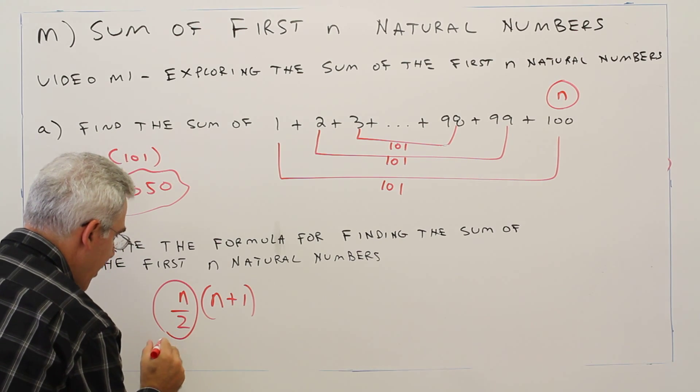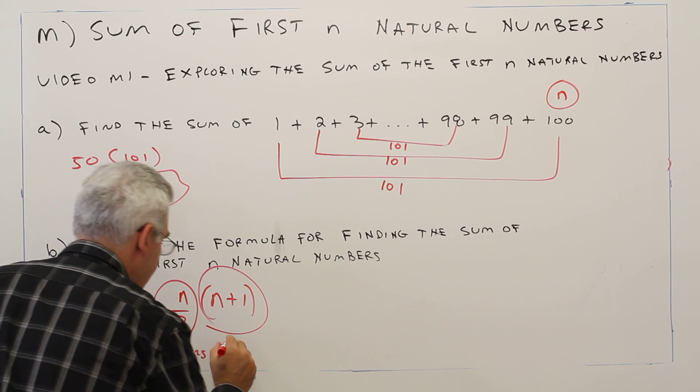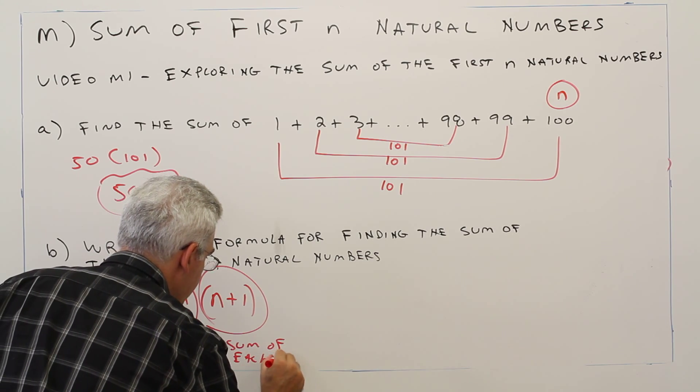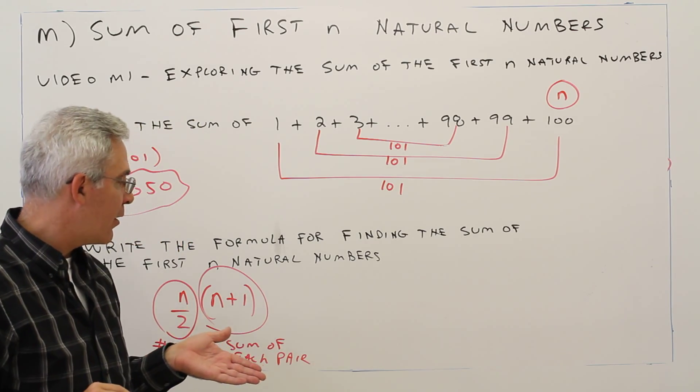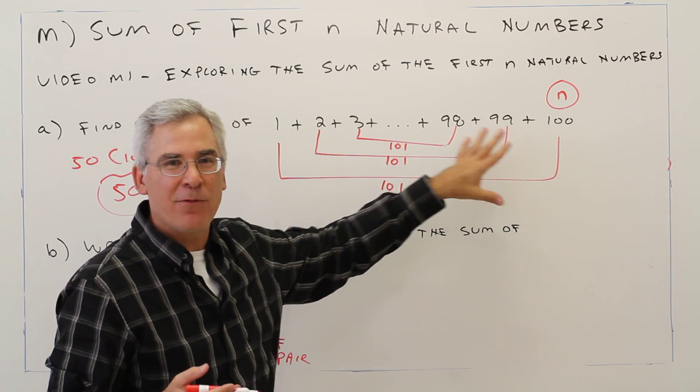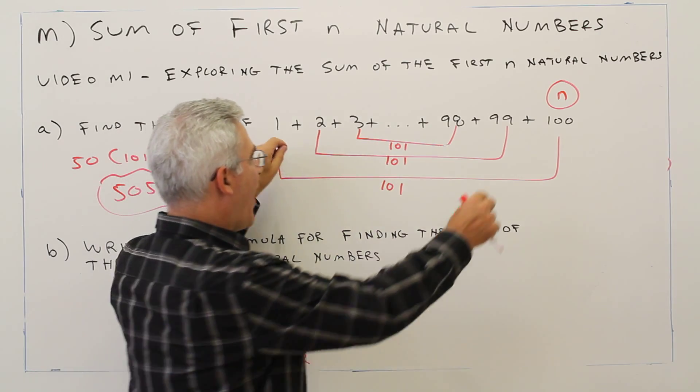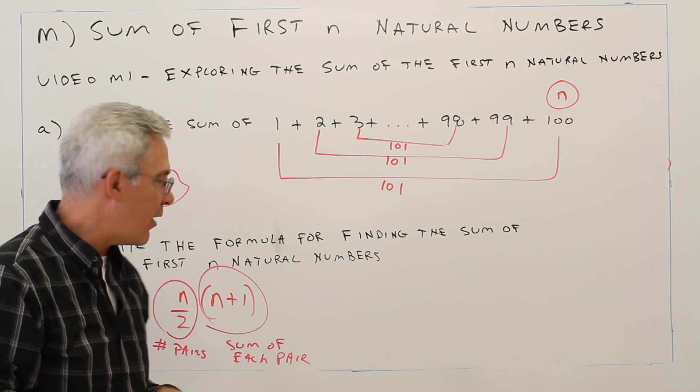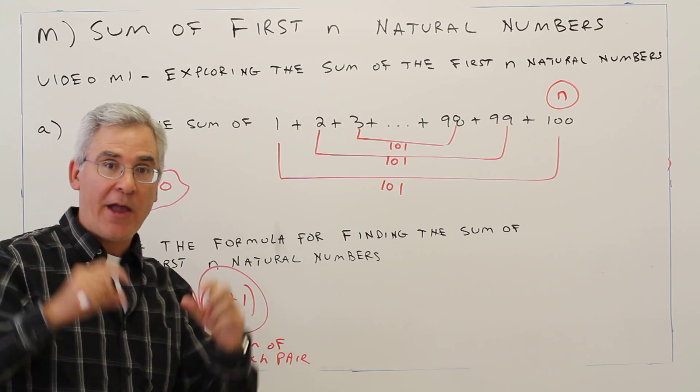Okay, so again, this is the number of pairs. And this is the sum of each pair. So n over 2 times n plus 1. And I'm not good at remembering formulas. So what I do is I just kind of work out the problems intuitively this way. I find the sum of the outers and then I find how many pairs there are. So once again, the formula is n over 2 multiplied by n plus 1.